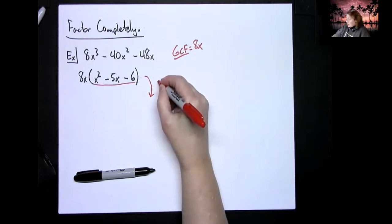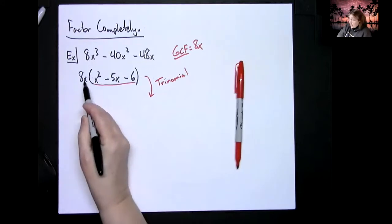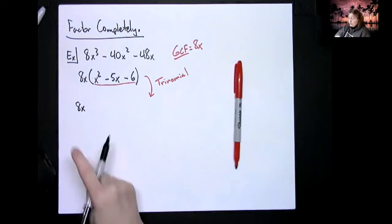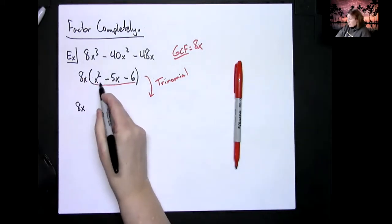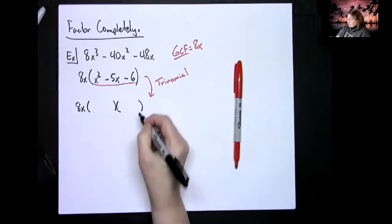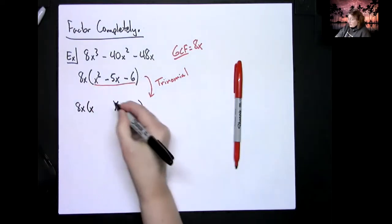The 8x stays, that's a big mistake too, people drop that 8x. This trinomial on the inside will factor into two binomials and we did this earlier. x² would be an x here and an x, x times x is x².